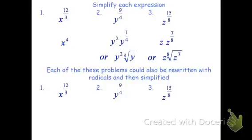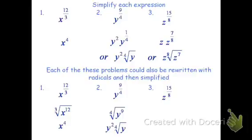Now I could do this another way. Instead of going straight to the exponents, I could rewrite each of these as a radical. I could say that instead of x to the 12 thirds, this is the 3rd root of x to the 12th. I can then reduce by dividing the index into the exponent — 3 goes into 12 four times evenly, so I just get x to the 4th. For y to the 9 fourths, I can say it's the 4th root of y to the 9. 4 goes into 9 twice with 1 left over, so it's y squared times the 4th root of y.